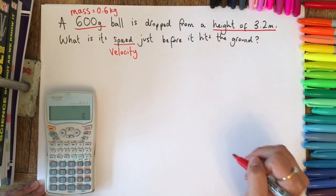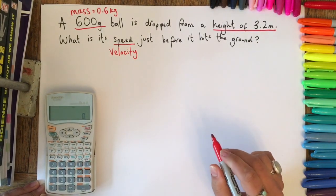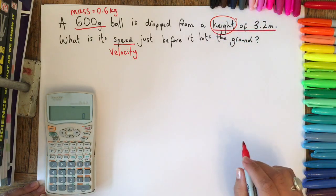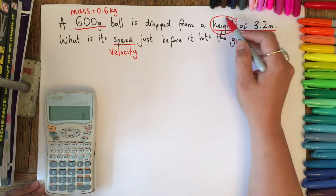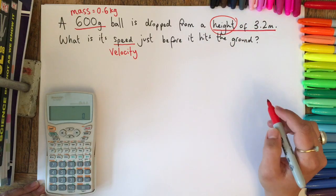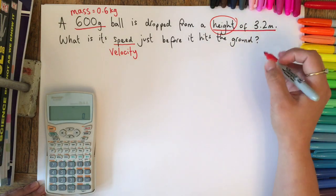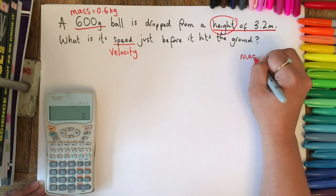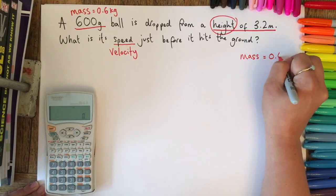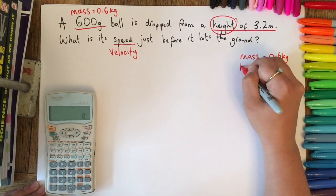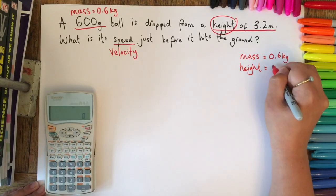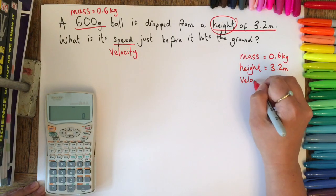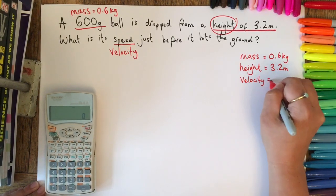It's actually the velocity that we want to be looking at because that's what we want to find in one of our equations. Like I said before, this word 'height' is important because when we're talking about height there is one equation that we really need to think about. But first of all, we're going to write down what we've got because that's really good practice for calculation technique. We've got a mass of 0.6 kilograms, we've got a height of 3.2 meters, and it's asked me for a speed or for a velocity.